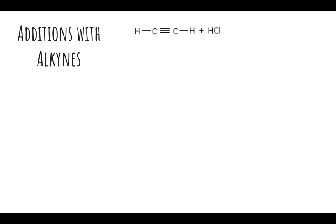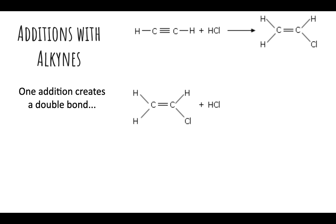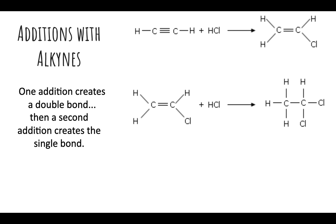Finally, if we look at additions with alkynes, which have triple bonds, they're going to react in the exact same way—they're just going to react twice. One addition happens first. Here we're adding HCl: an H to one carbon and a Cl to the other, leaving us with a double bond. Then we add another HCl to break that double bond to make the single bond.